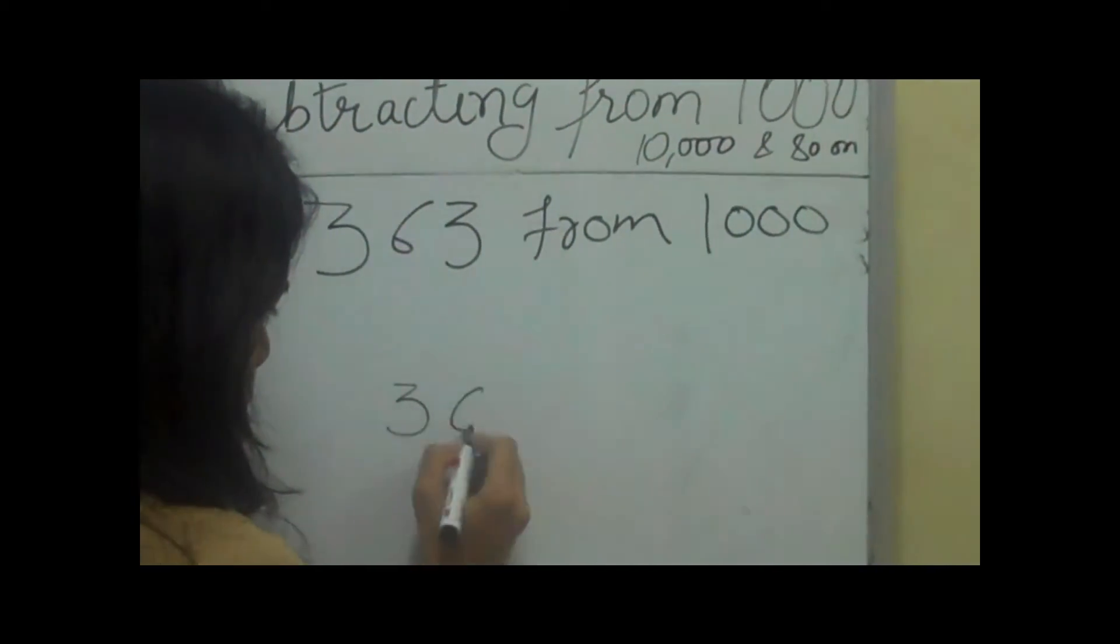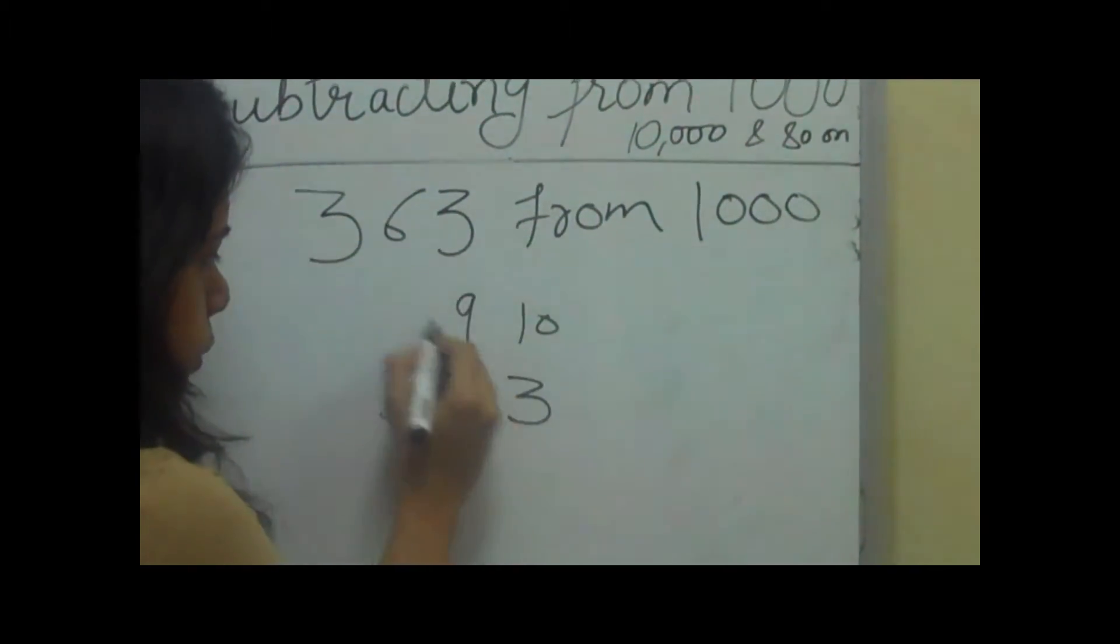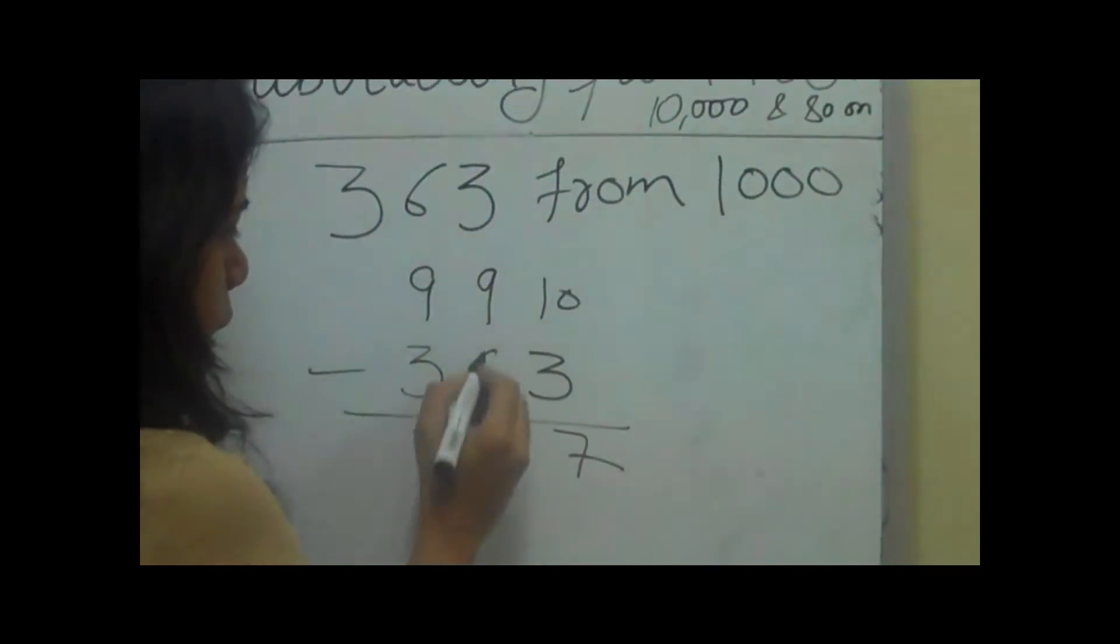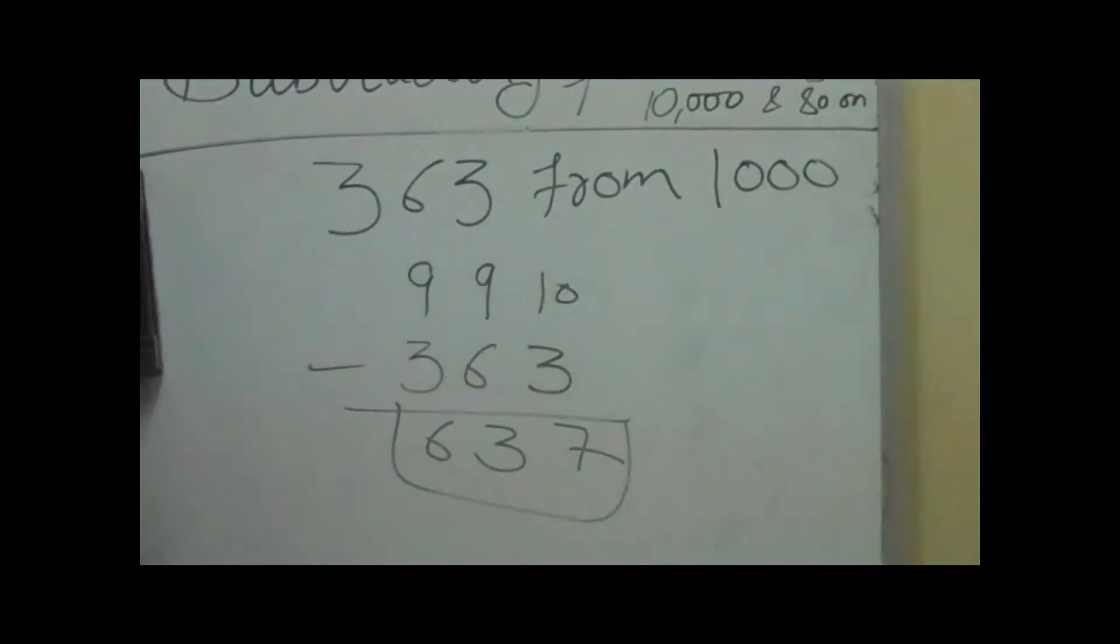So what we will do is subtract the last digit from 10 and other digits from 9, which makes 10 minus 3 is 7, 9 minus 6 is 3, and 9 minus 3 is 6. That's the answer.